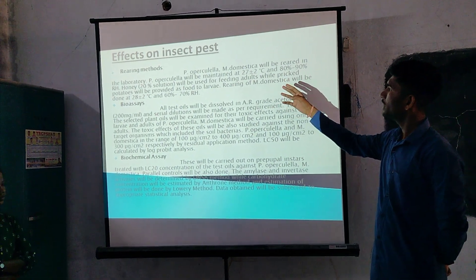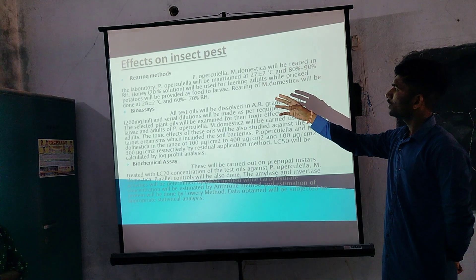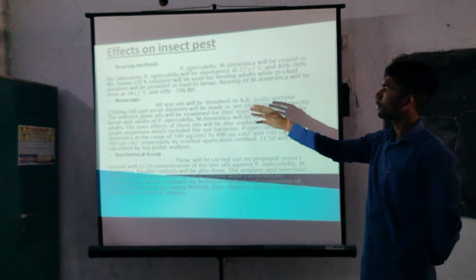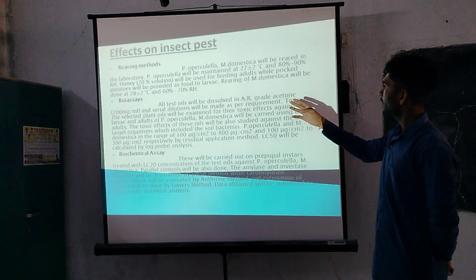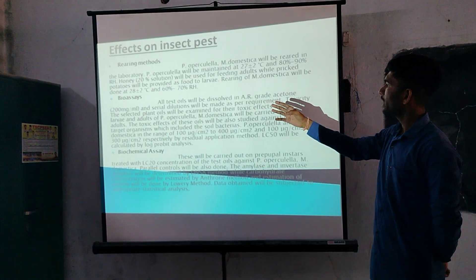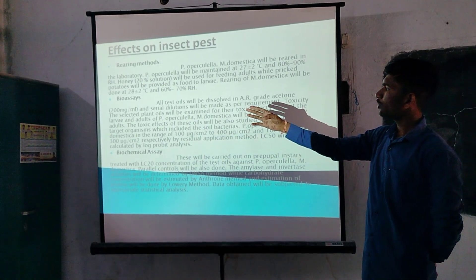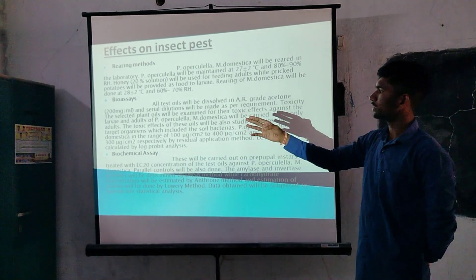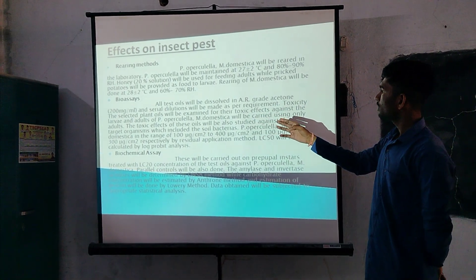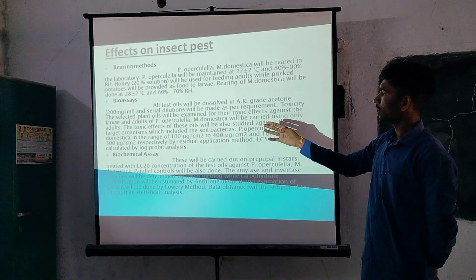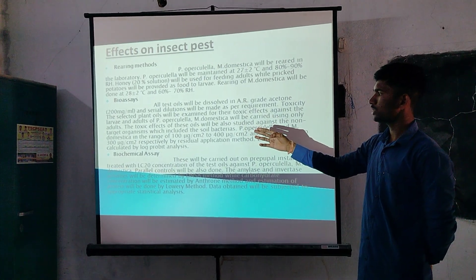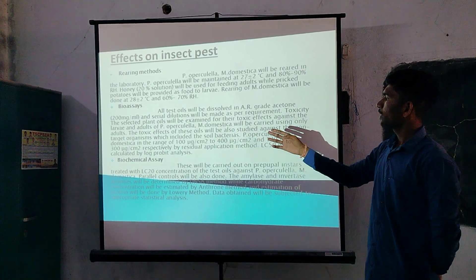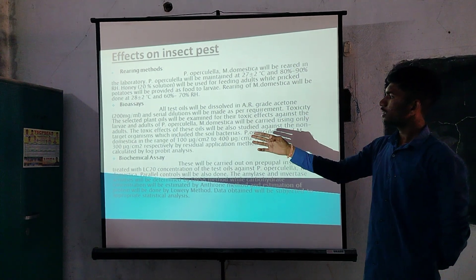Honey 20% solution will be used for feeding adults, while sliced potatoes will be provided as food for larvae. Rearing of M. domestica will be done at 28±2 degrees Celsius and 60% to 70% RH. Bioassay: all the test oils will be dissolved in AR grade acetone at 200 mg/mL, and serial dilutions will be made as per requirement. Toxicity: the selected plant oils will be examined for their toxic effects against the larvae and adults of P. operculella and M. domestica using only adults. The toxic effects will also be studied against non-target organisms including soil bacteria. Concentration ranges of 100 mg/cm² to 400 mg/cm² and 100 mg/cm² to 300 mg/cm² respectively, by residual application method. LC50 will be calculated by log-probit analysis.